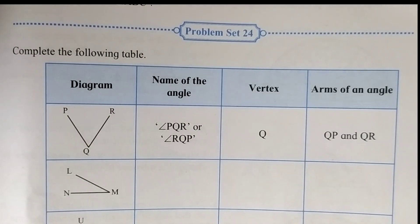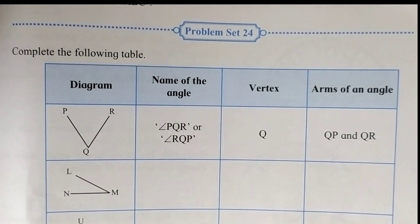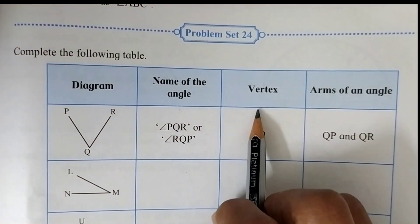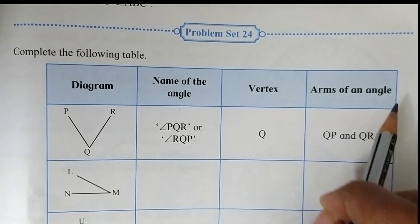Now turn to our problem set 24. The first question is complete the following table. There are four columns: diagram, name of the angle, vertex, and arms of an angle.